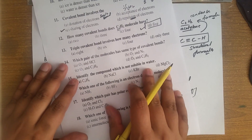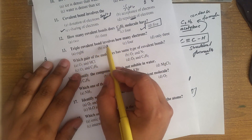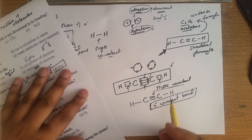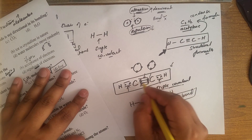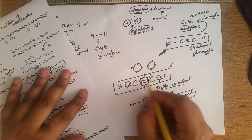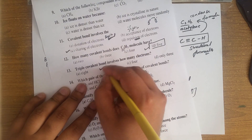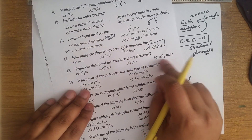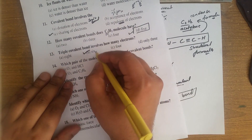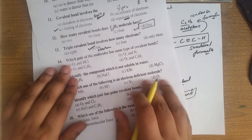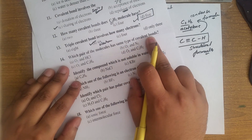Let's talk about the next MCQ: a triple covalent bond involves how many electrons? Each bond pair contains 2 electrons, so a triple bond has 3 bond pairs × 2 electrons = 6 electrons total. The right answer is 6 electrons.